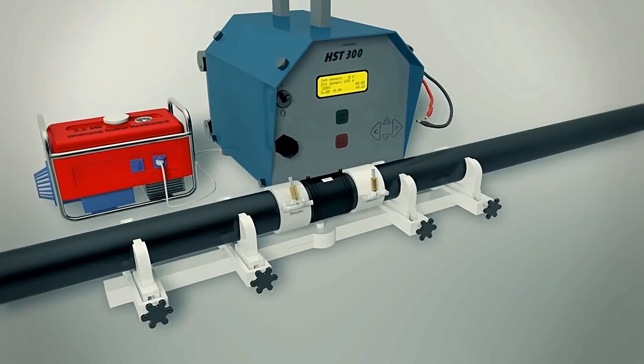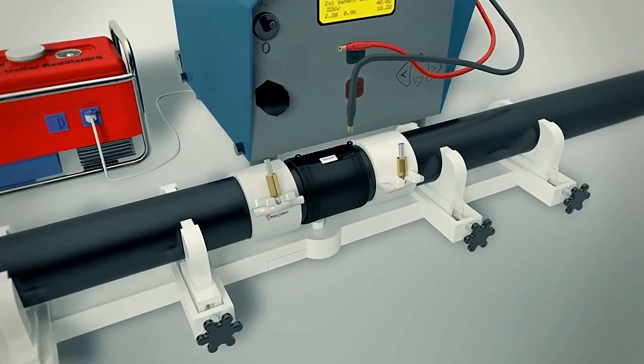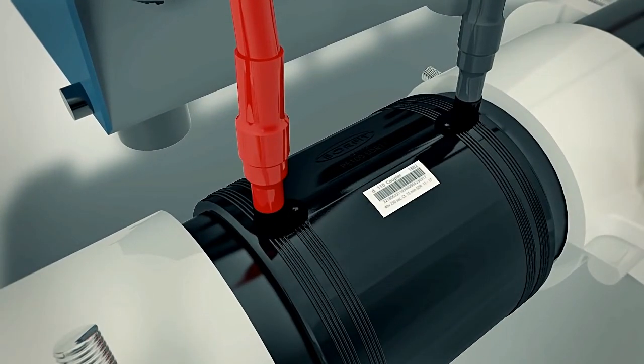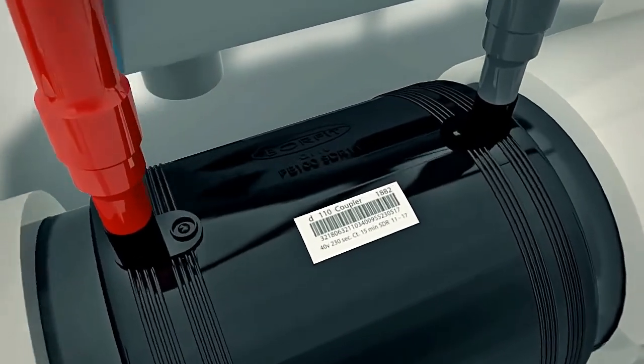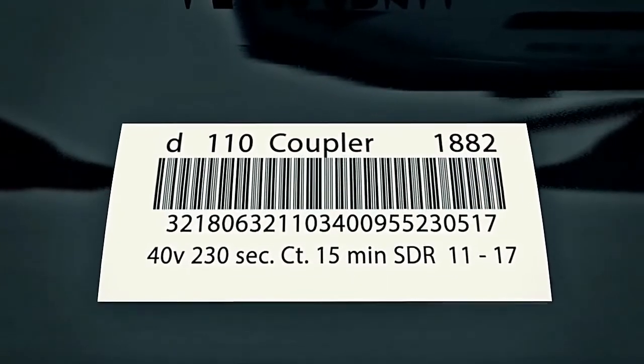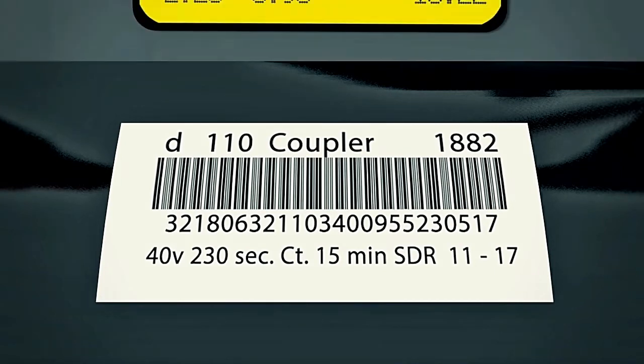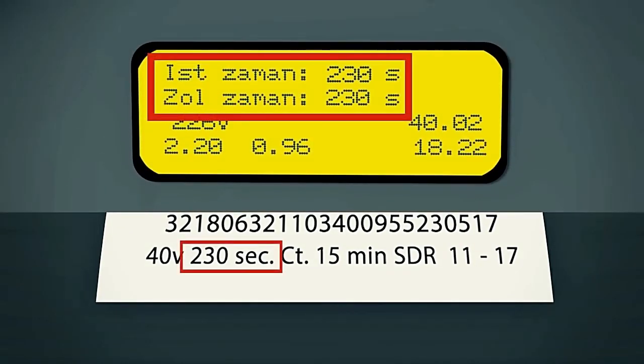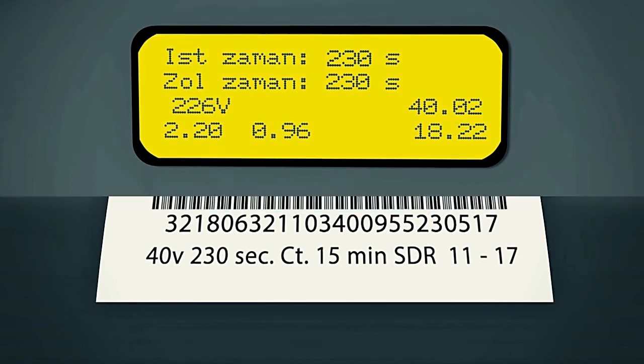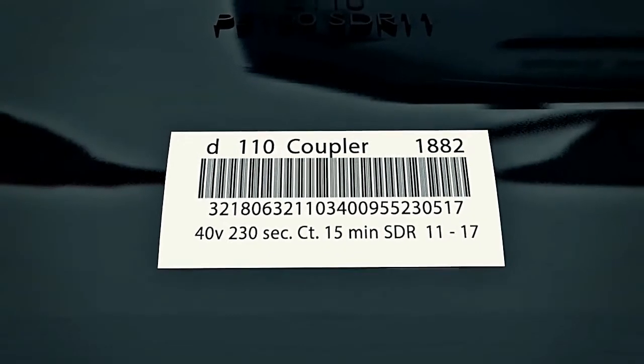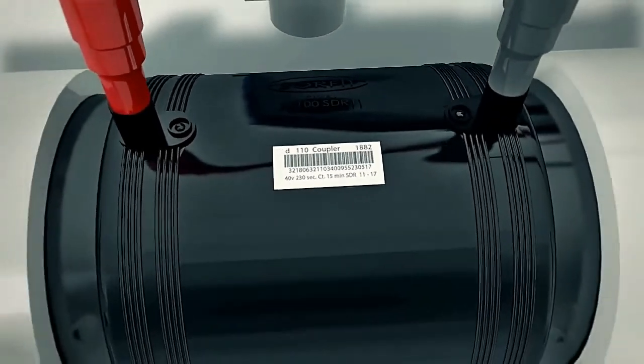Connect the electrofusion welding machine to generator. Then connect the terminals to the fitting. The fusion time may be set by a self-recognition resistor. Other options include a barcode reader and manual input. The correct fusion time is shown on the barcode label on each fitting. Be sure to check that the fusion time in the controller screen is identical to fusion time on the barcode label.